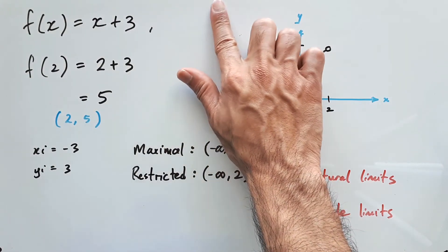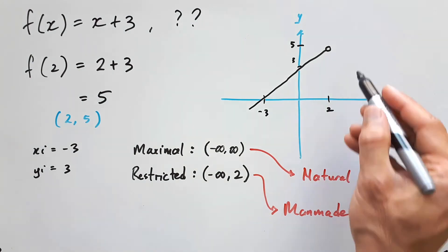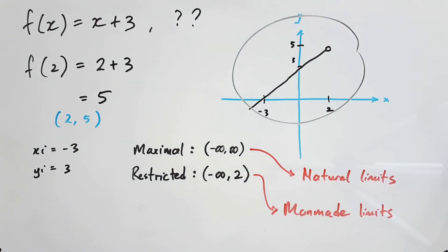But what if it wasn't given? What if there was no limit here, and they just gave you the rule? Most likely they will provide the graph for you, or some other piece of information, so that you can reverse engineer what the domain might be. Looking at the graph, we know that it is restricted to some extent because it doesn't make sense for a straight line to just stop midway like that, so there must be some kind of man-made limit there.